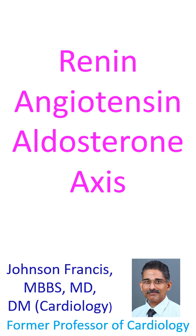Specifically, it is angiotensin 2 which is one of the most potent vasoconstrictors. Renin converts angiotensinogen to angiotensin 1, which is then converted to angiotensin 2 by angiotensin converting enzyme, ACE.